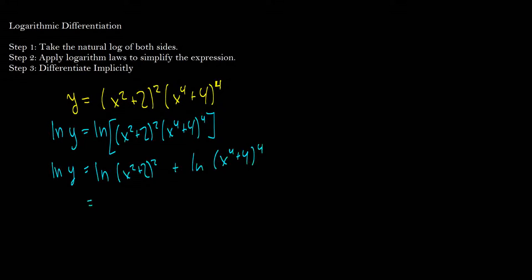In fact, we can apply another log rule here. If you remember with exponents, you can bring the exponent down. So bring these exponents down. So now we have 2 times the natural log of x squared plus 2 plus 4 times the natural log of x to the 4th plus 4.